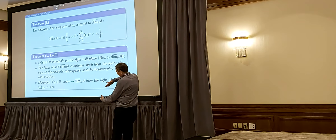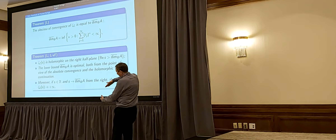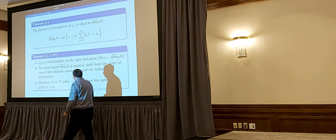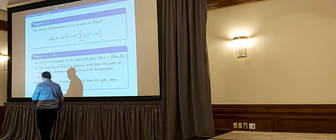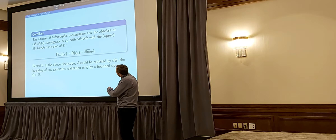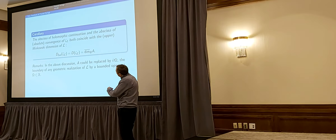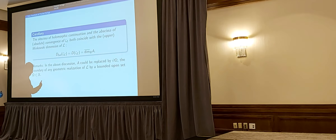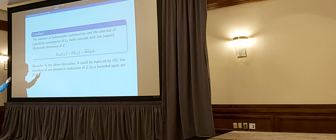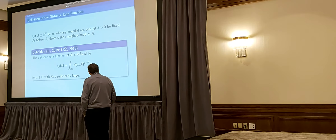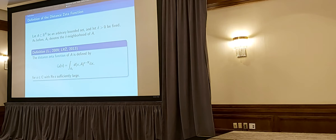In particular, you have a singularity at the upper Minkowski dimension. If you approach from the right along the real axis or along a cone with vertex at the upper Minkowski dimension, then the zeta function diverges. The abscissa of holomorphic continuation coincides with the abscissa of absolute convergence, and both equal the upper Minkowski dimension. This is true for any fractal string, except for a single interval.